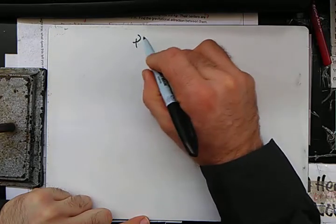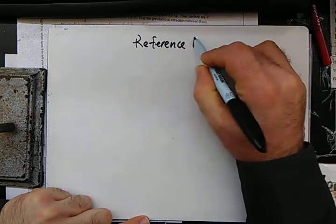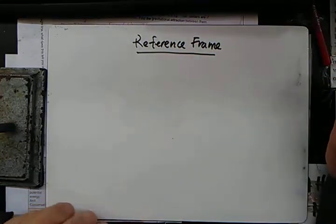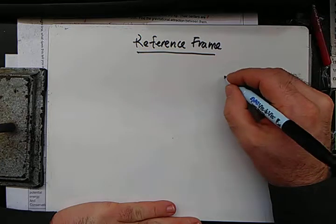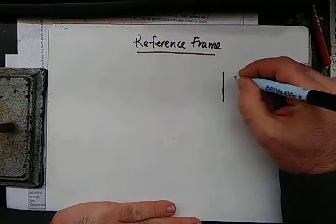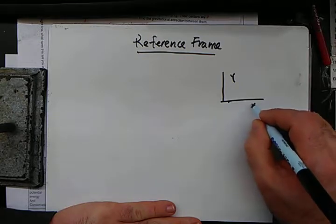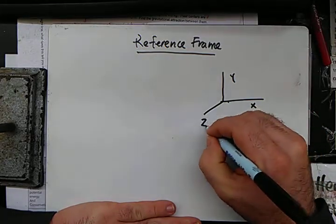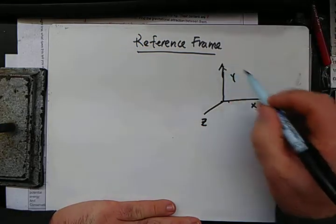We're going to come up with something called a reference frame. And all this does is nothing crazy about it. It just says that there is a y-axis, an x-axis, and a z-axis. Now, we're going to work separately.